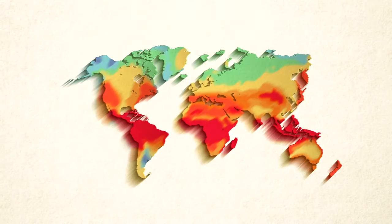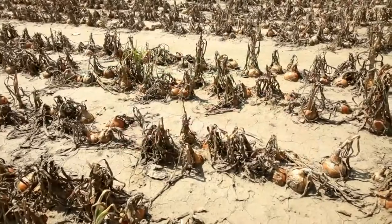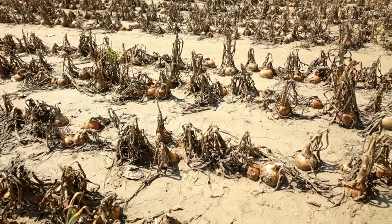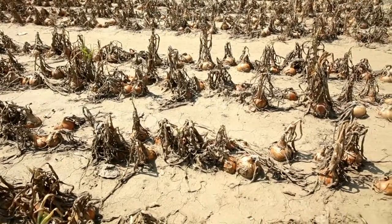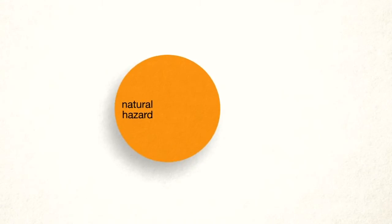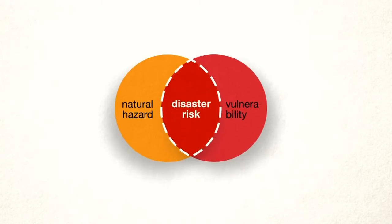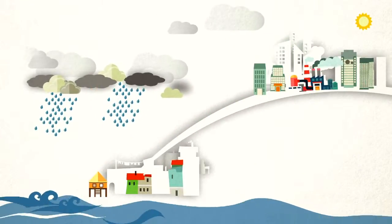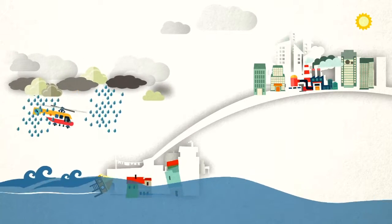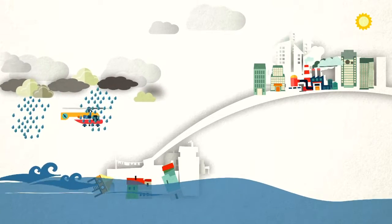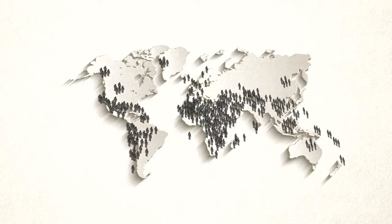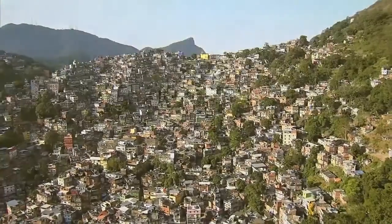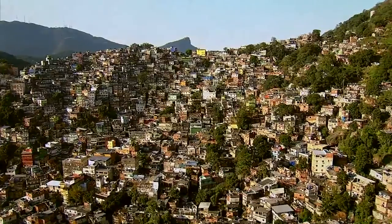If climate change progresses, these climate-related hazards will increase and create new risks for natural and human systems. However, natural hazards are only one factor for disasters, as disaster risk is determined by people's vulnerability during the occurrence of a natural hazard. This risk increases when people and their livelihoods are located in dangerous locations or when they are not adapted to environmental conditions. Other factors like demographic growth and urbanization further increase people's vulnerability when they are linked to unsustainable development.